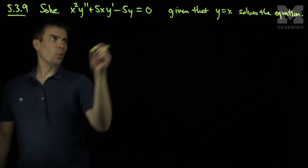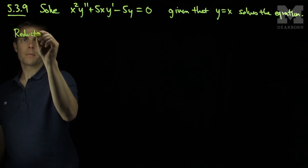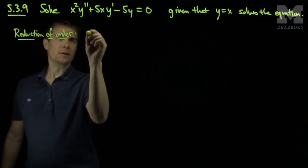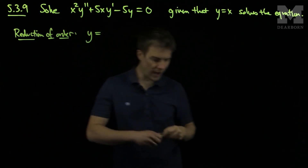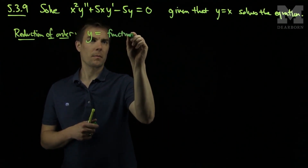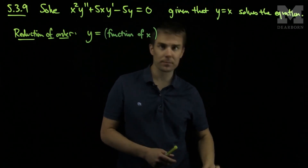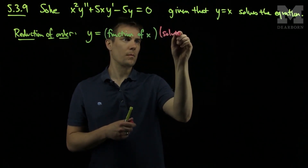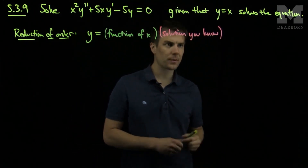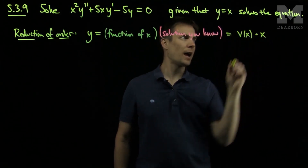So what we do is we're given one solution to a second order equation. We can use reduction of order. Reduction of order tells us to look for a solution y which is of a product form — a function of x times the solution we know. So for us, this will be v of x times x, the solution we know.